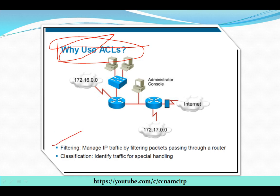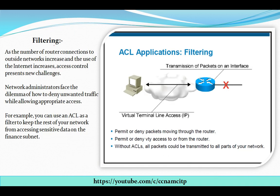There are two basic advantages: one is filtering and the second is classification. For example, in your network you have the internet on one side, one network, administrator control, and another network. Filtering means managing IP traffic by filtering packets passing through a router. Classification means identifying traffic for special handling.